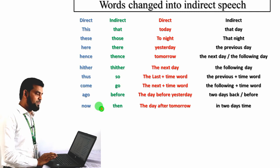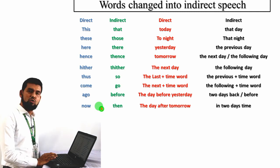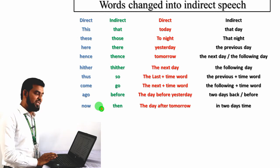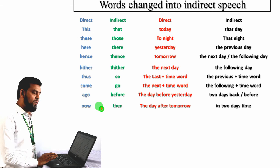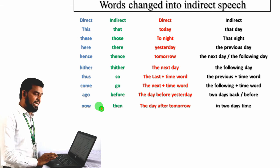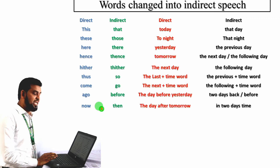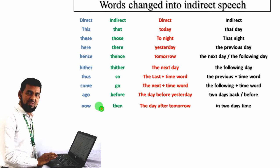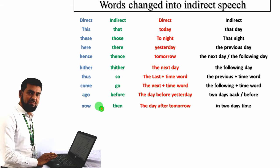Words changed into indirect speech: if you find 'today' in direct speech, it will become 'that day'. 'Tonight' will become 'that night'. 'Yesterday' will become 'the previous day'. 'Tomorrow' will become 'the next day' or 'the following day'. 'The next day' will become 'the following day'. 'Last' plus a time word — for example, 'last month' or 'last week' — will become 'the previous month' or 'the previous week'.